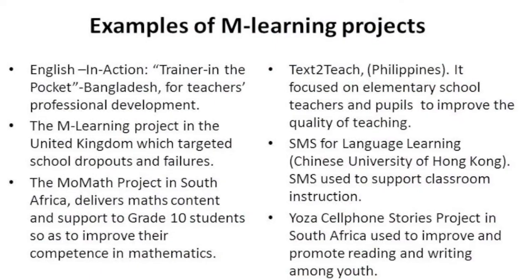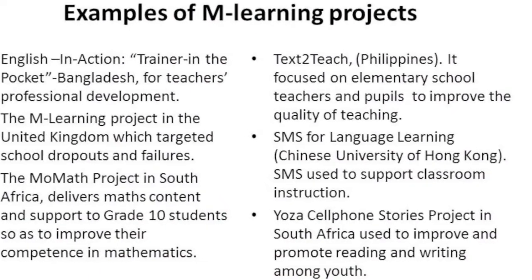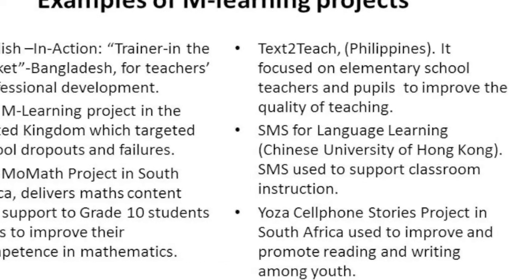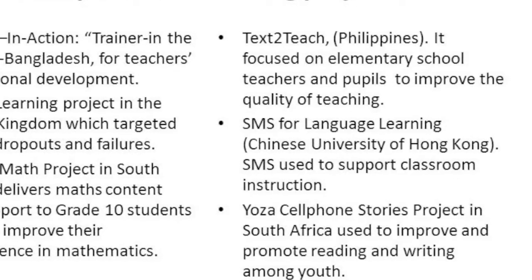Apart from these three examples, there are many other examples of successful projects that use M-learning to improve the quality of education and broaden access to quality education for all social groups, particularly marginalized groups, as articulated in the Education for All (EFA) goals and MDG goals. Mobile devices constitute affordable media for extending educational opportunities to learners, particularly marginalized groups who do not have access to schooling. Mobile learning can be used to promote equality of educational opportunity among people living in remote areas or nomadic communities whose mode of life makes it very difficult for them to benefit from existing educational provisions.